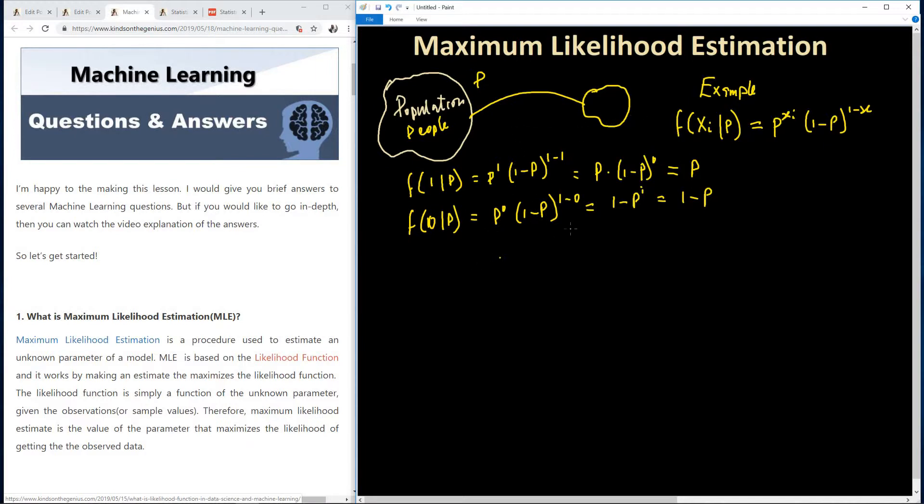So now if we take this function for all the values from, let's say we have n number of items here, we have the value of xi. f of xi for i is equal to 1 to n. So at this point, we need to now take several of these functions. So we have the function is going to now be f of x1, x2, all the way to xn, given the parameter p that we're trying to estimate. So that will give us f of x1 given p times f of x2 given p all the way to f of xn given p.